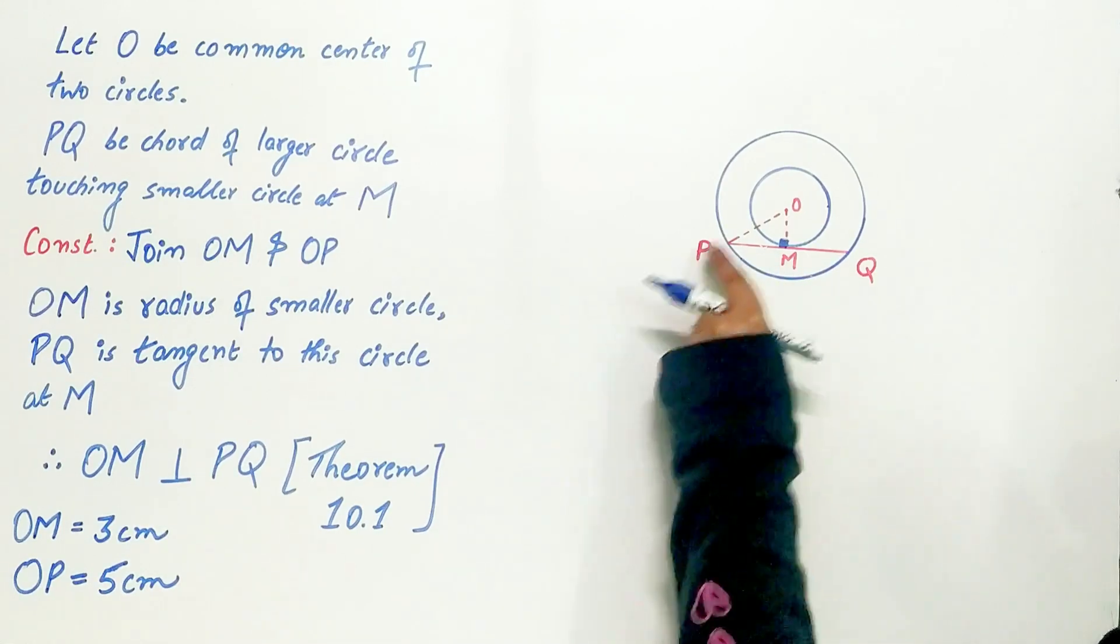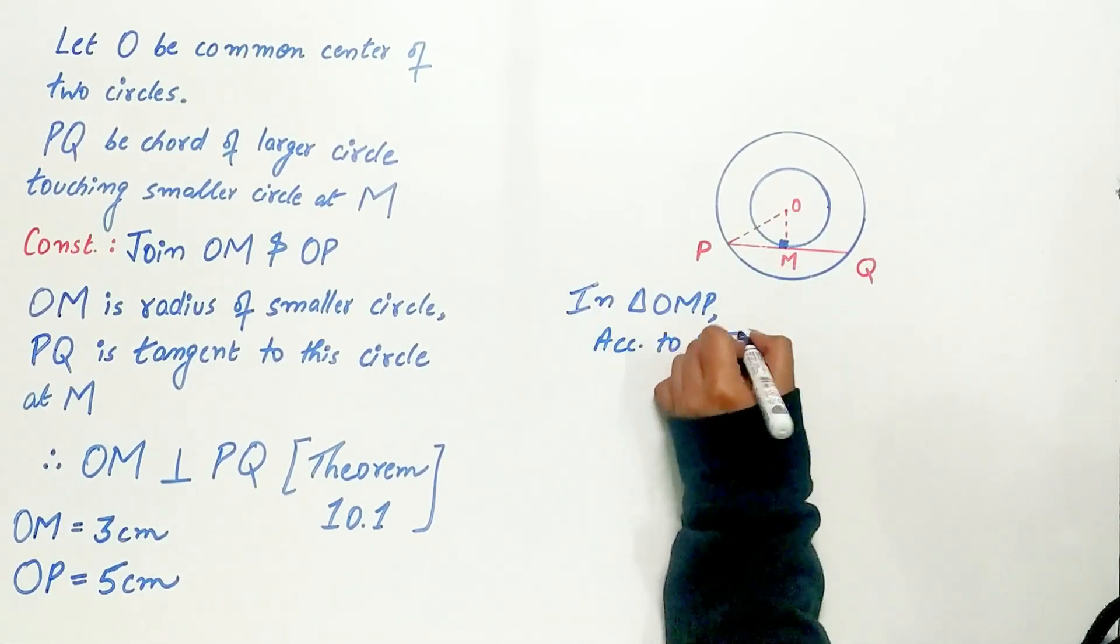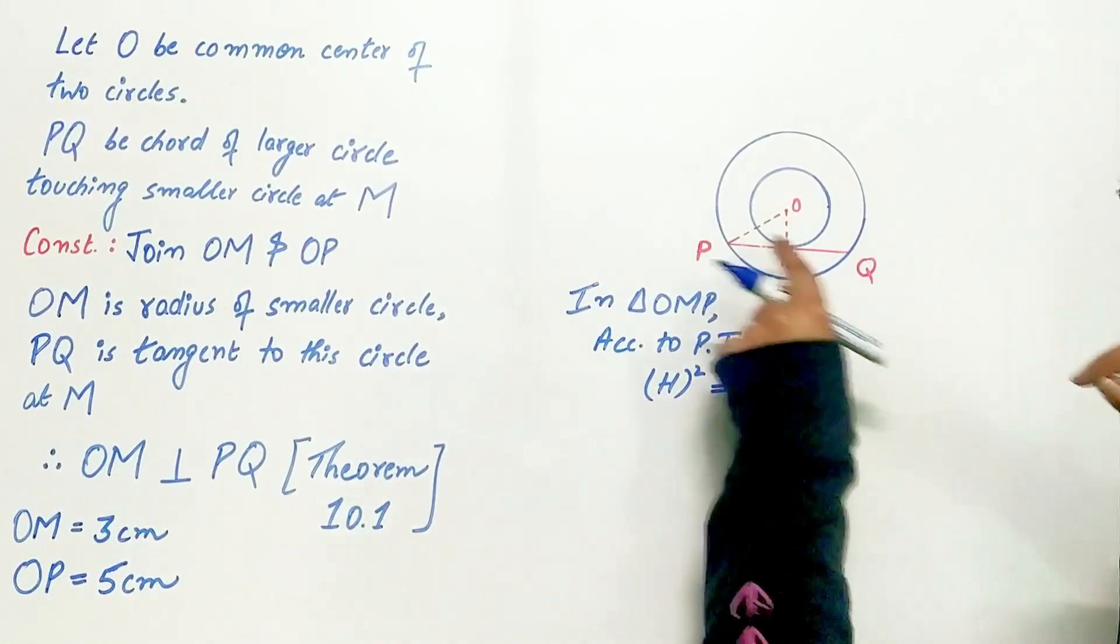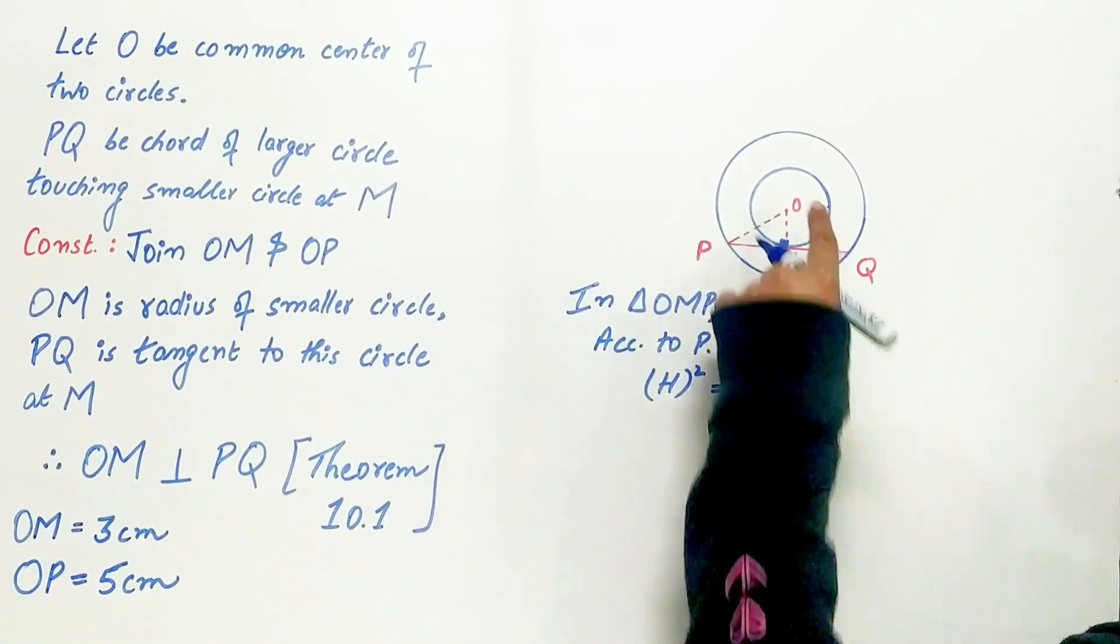Triangle OMP is a right angled triangle. So according to Pythagoras theorem, hypotenuse square is equal to base square plus perpendicular square.